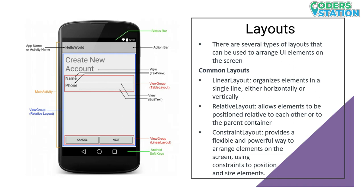The next layout is ConstraintLayout. ConstraintLayout provides a flexible and powerful way to arrange elements on a screen. When placing elements or views in a ConstraintLayout, we provide a position by specifying the x and y coordinates and the size of the element, and in this way we can arrange components on a screen and design an application.